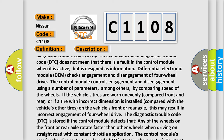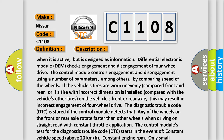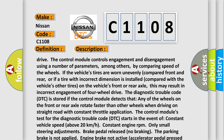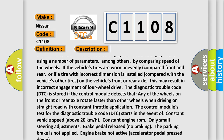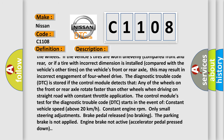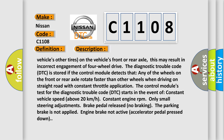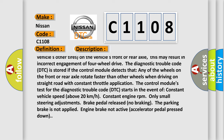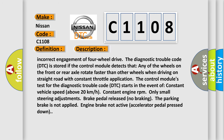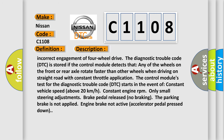The control module controls engagement and disengagement using a number of parameters, among others by comparing the speed of the wheels. If the vehicle's tires are worn unevenly front and rear, or if a tire with incorrect dimensions is installed compared with the vehicle's other tires, this may result in incorrect engagement of four-wheel drive. The DTC is stored if the control module detects that any wheels on the front or rear axle rotate faster than other wheels. The test starts when driving on a straight road with constant throttle above 20 km/h, constant engine RPM, only small steering adjustments, brake pedal released, parking brake not applied, engine brake not active, and accelerator pedal pressed down.